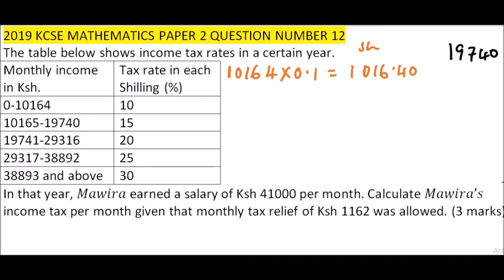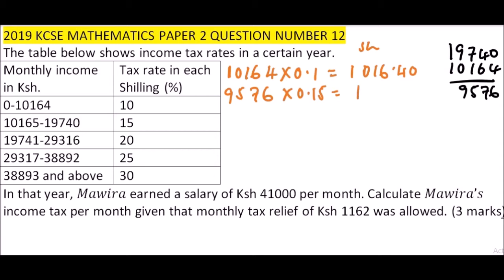We subtract 10,164 from 19,740 and you get 9,576. So we take that 9,576 and multiply by the rate, which is 15 percent, so it is 0.15. This equals 1,436.40 shillings.